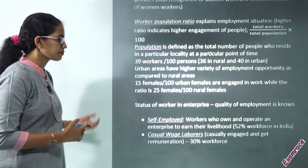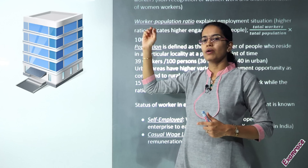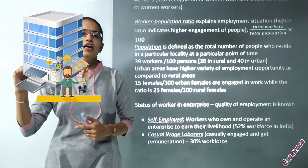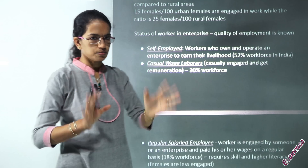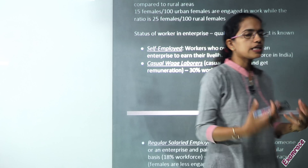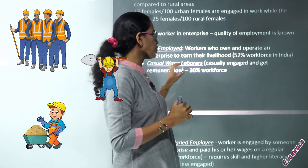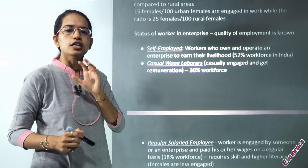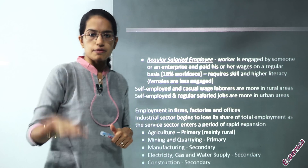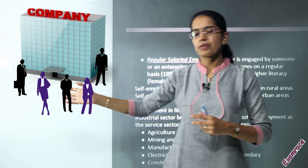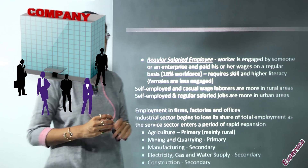When we talk about the kinds of employment, we broadly classify it under three heads. The first is self-employment — a person having his own small enterprise or business — contributing to nearly 52 percent of the workforce in both rural and urban areas. Casual wage laborers are those casually engaged in certain activities and not a permanent workforce; this accounts for 30 percent and is predominantly seen in rural areas. Regular salaried employees are predominantly seen in urban areas, engaged with bigger companies, and account for only 18 percent of the total workforce.